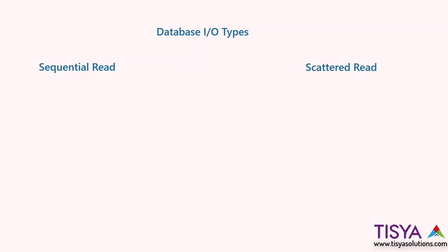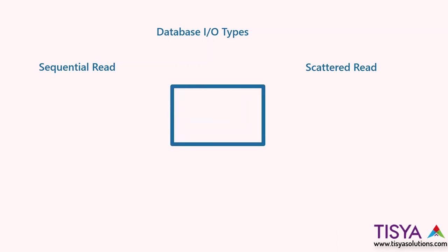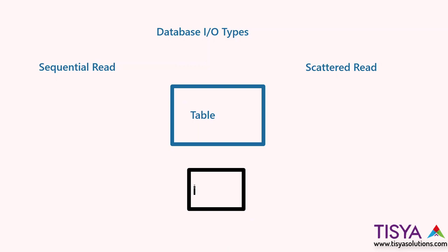Let's look at sequential read. To understand this, let's assume we have a table, which I will represent by this diagram — I'll call it a table. Let's say we have an index on one of its columns used for lookup. This is the employee table and the index is made on the salary column.